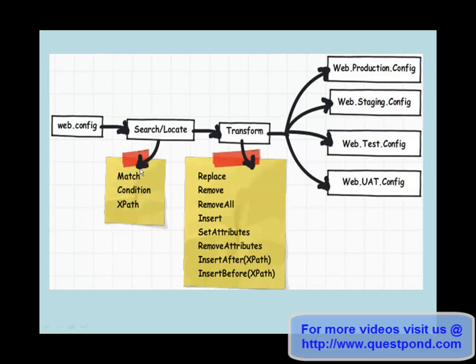There are various functionalities provided by the web.config transformation engine to help you search and transform elements and values. To change the connection string in the parent web.config, we will use the Match function from the search-and-locate step to find the element by name, then use SetAttributes to change the value.